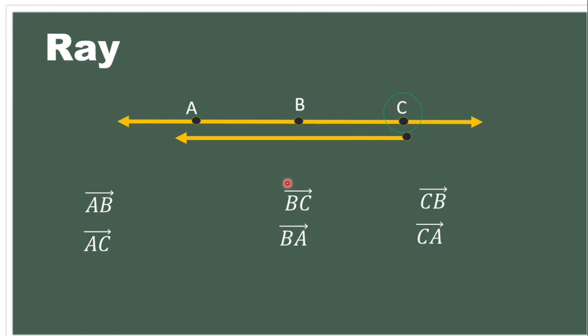In naming a ray, the first letter we use is the endpoint, followed by the point in the direction the ray extends. The question is: can ray CA be called ray AC? No, because they have different endpoints. The endpoint of ray CA is point C, and the endpoint of ray AC is point A. Rays with different endpoints are different rays.